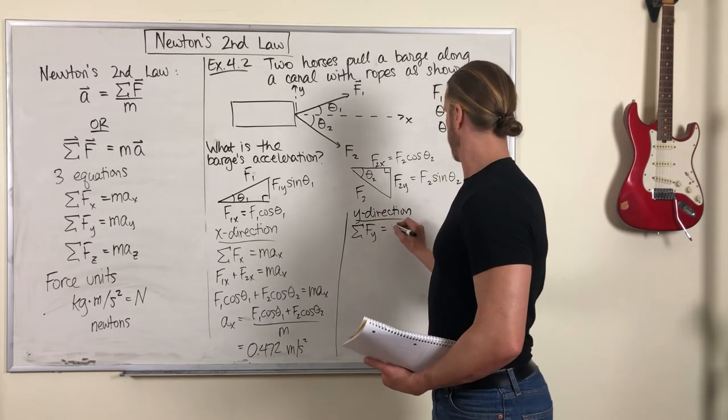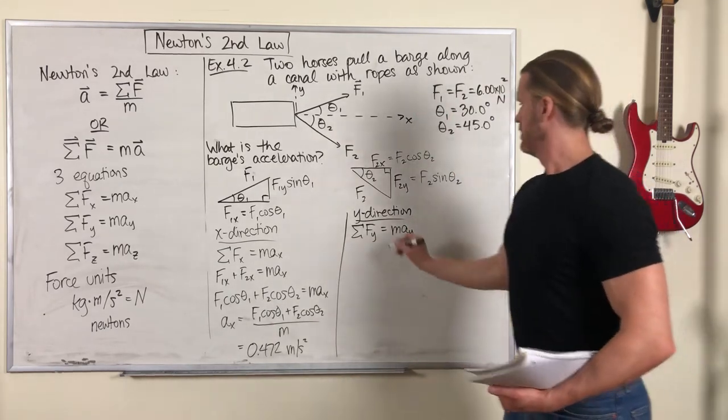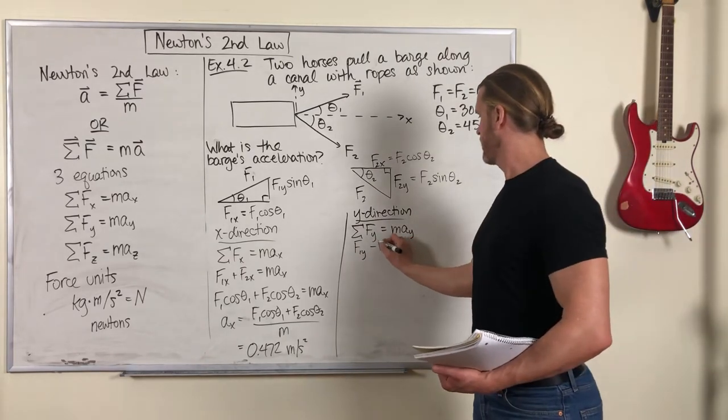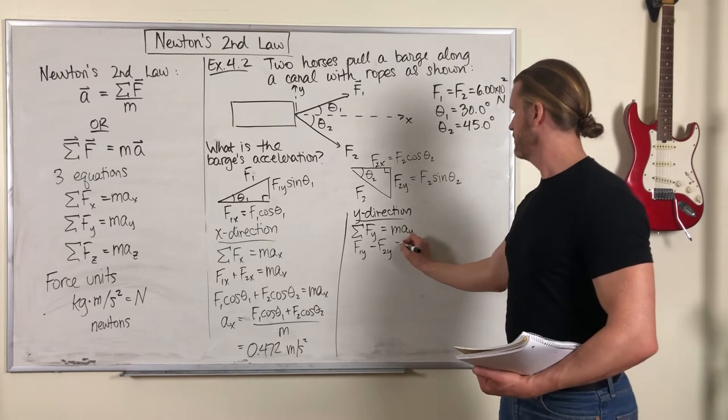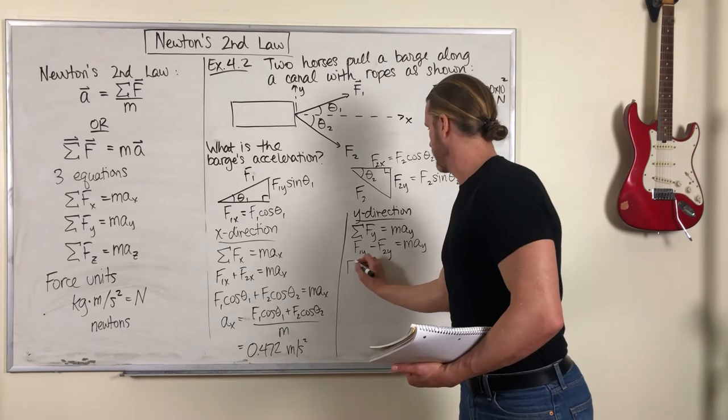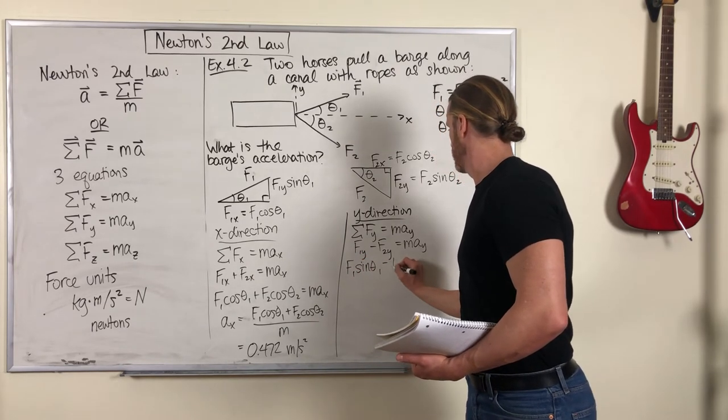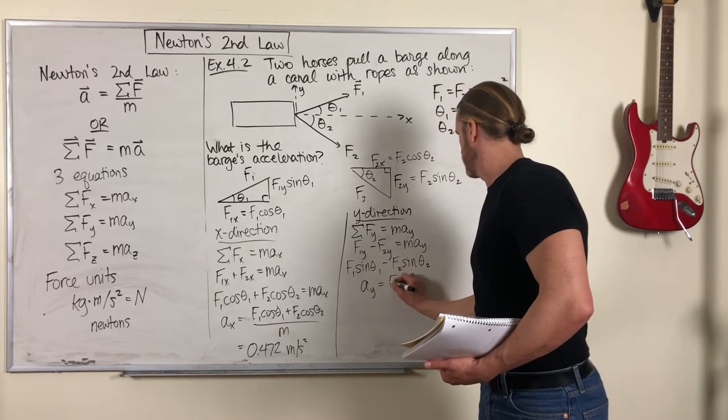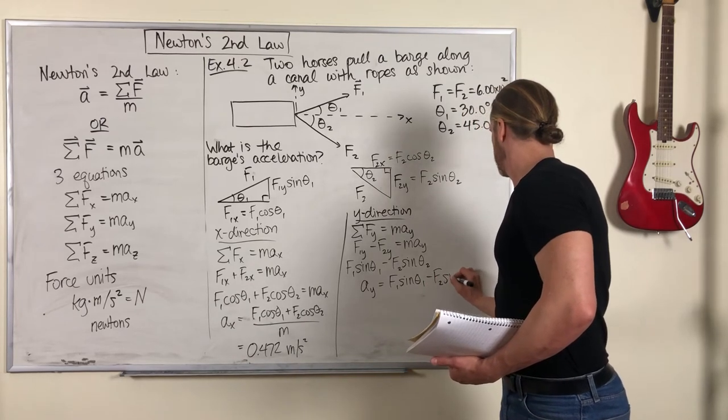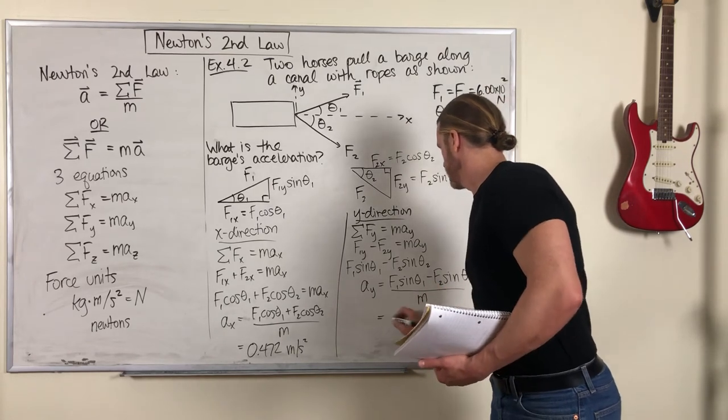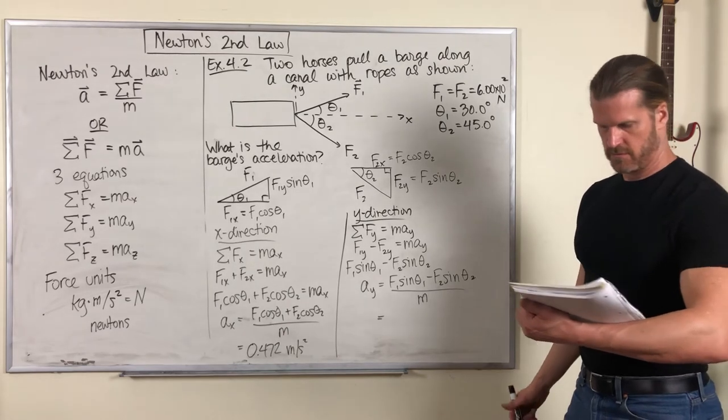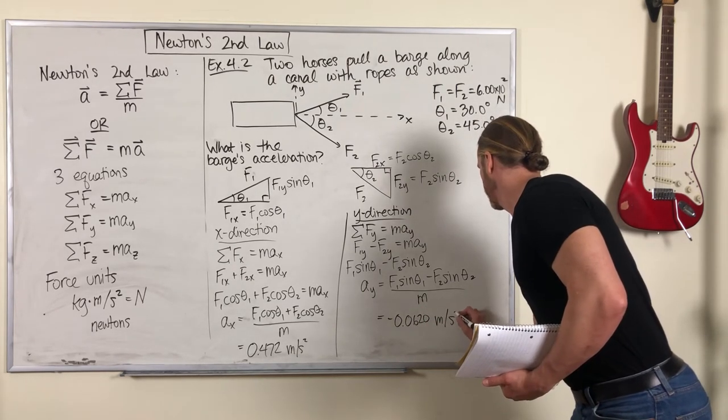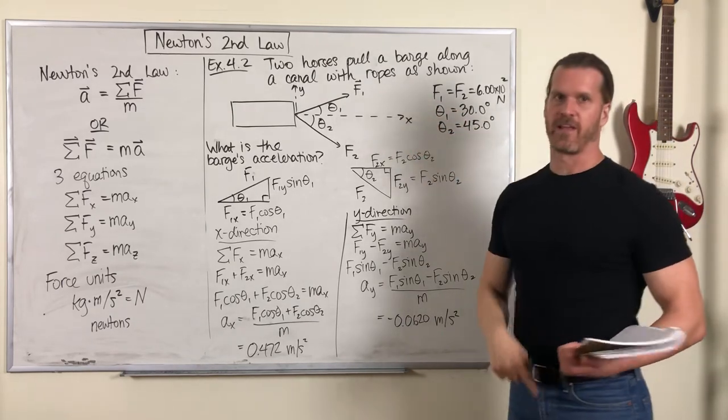In the Y direction, we use Newton's second law for those Y components. We've got F1y pointing in the positive Y direction and F2y pointing in the negative Y direction. That was F1 sin theta 1 minus F2 sin theta 2. So Ay is all that stuff, and it equals negative 0.620 meters per second squared, meaning it's going slightly this way, slightly to the right of forward.